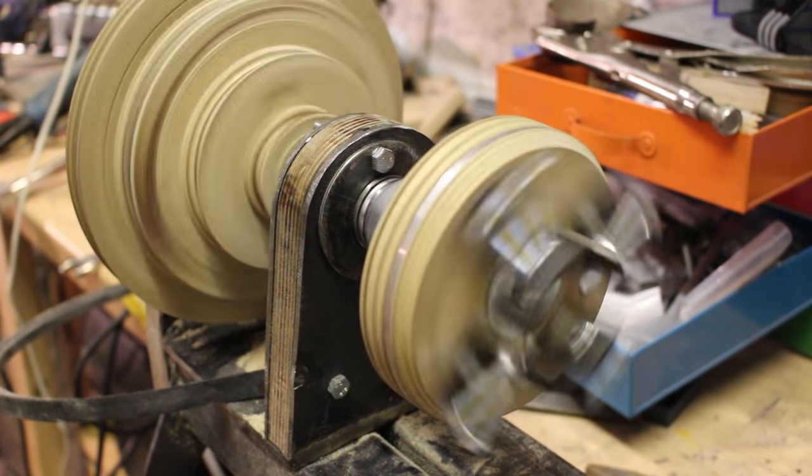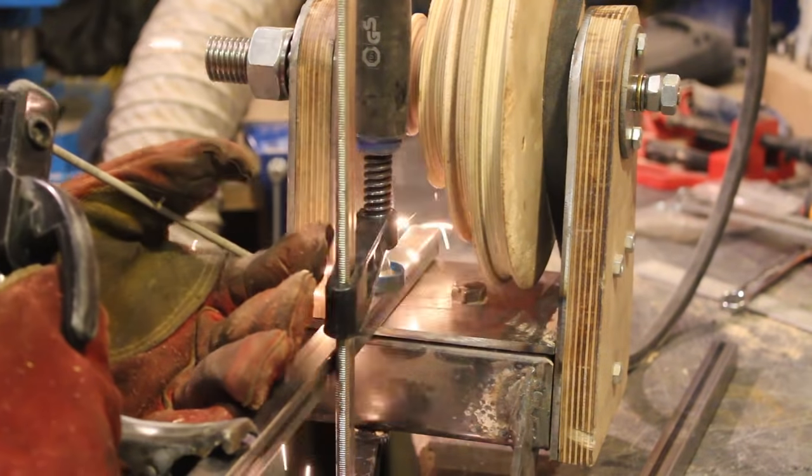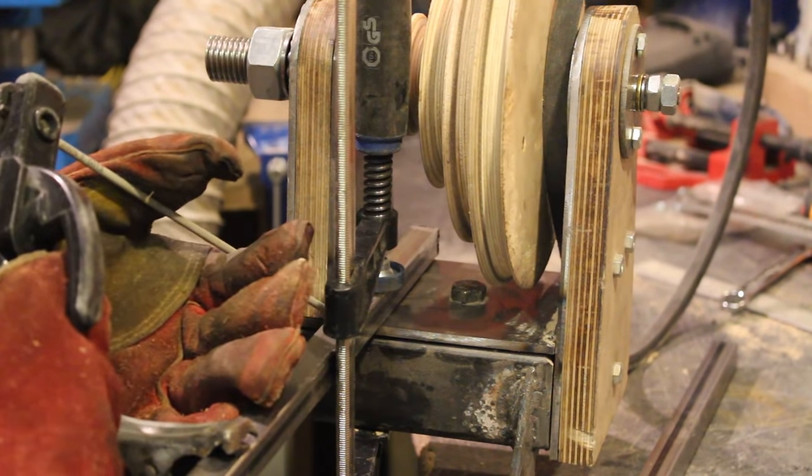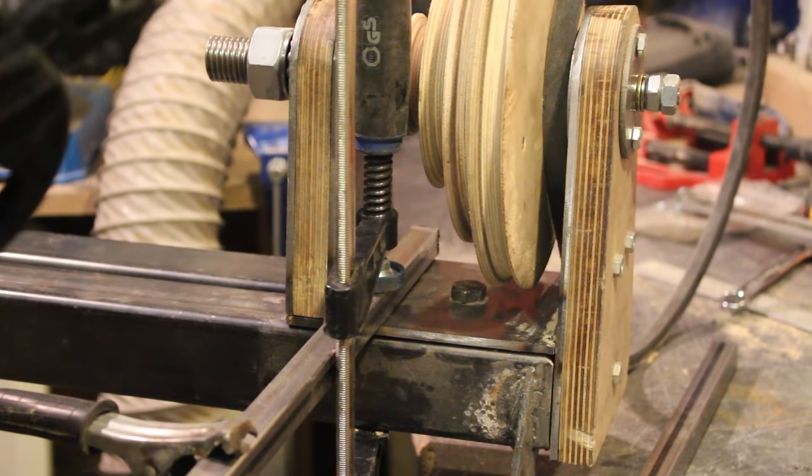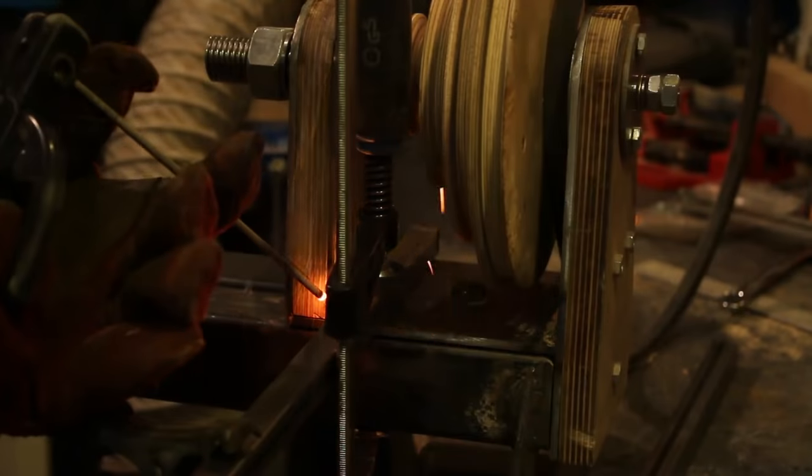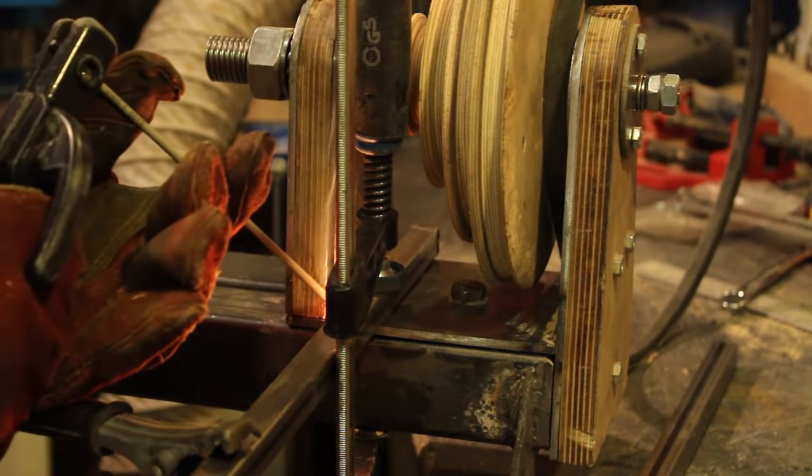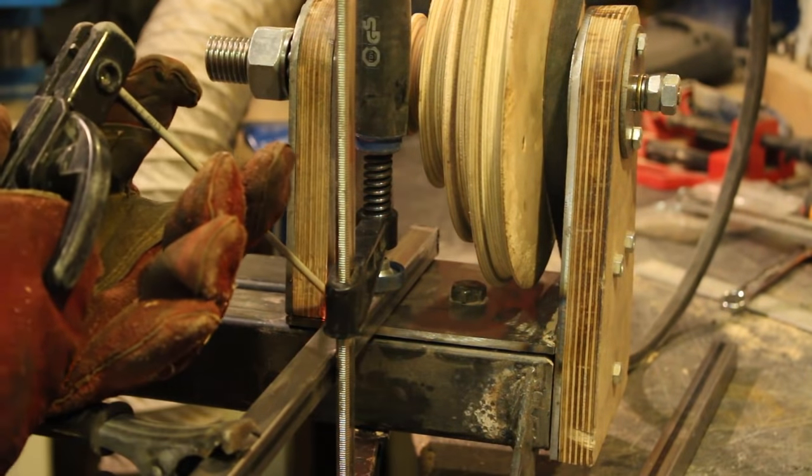So now I can take something like this four-jaw chuck that I made a while ago and just thread it into the headstock and it works great. To make the actual mount for the motor itself I then took these pieces of 20mm square steel tubing and arc welded them onto the base. Unfortunately these are really thin walled and I didn't realize at the time but my amperage was way too high and I ended up burning through in a couple of places.